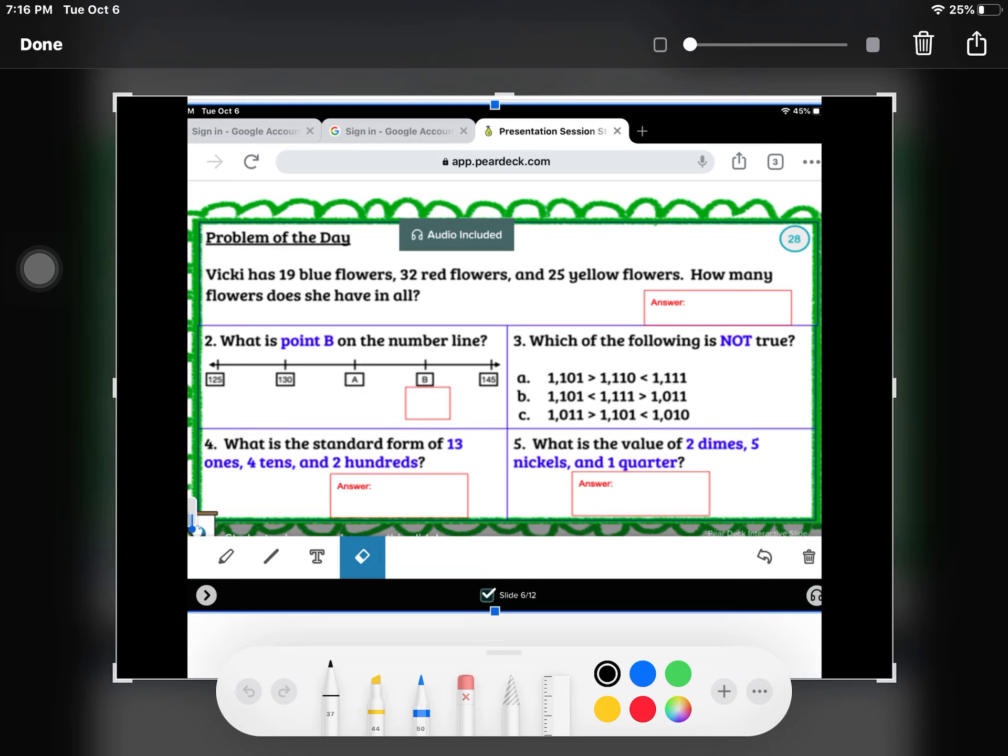Number three, which of the following is not true? 1101 is not greater than 1110, so we know it's not A. B says 1101 is less than 1111, which that is true.